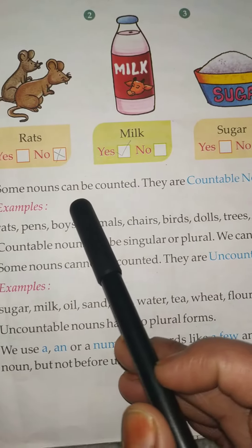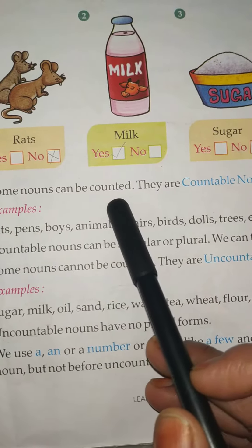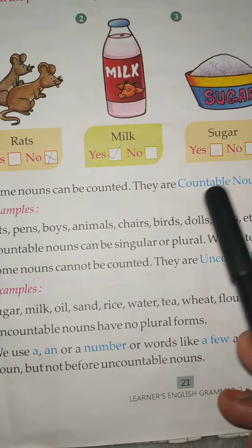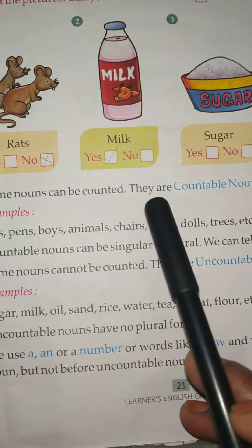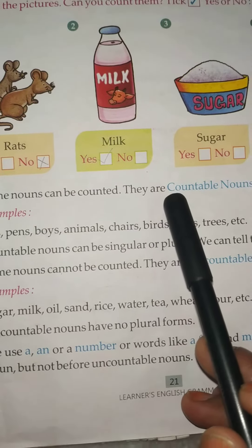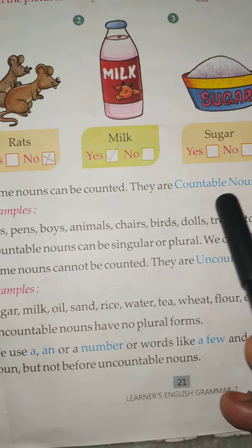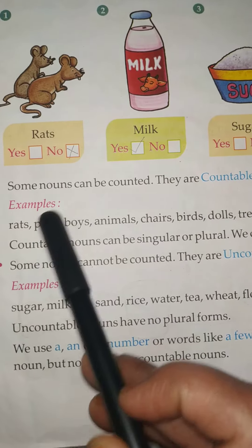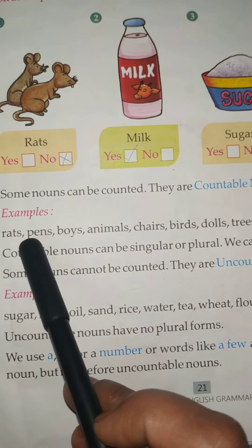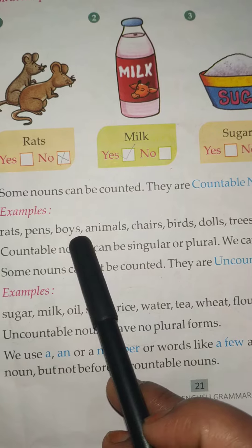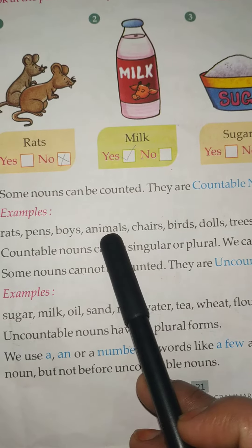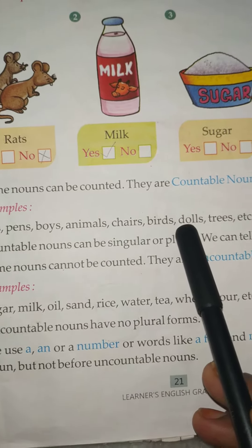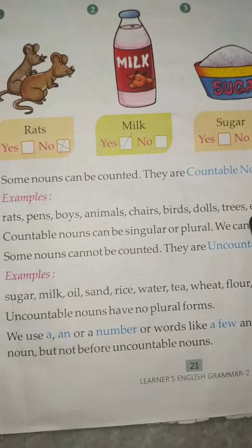Some nouns can be counted. They are countable nouns. Which nouns can we count? We call them countable nouns. Examples: rats, pants, boys, animals, chairs, birds, dolls, trees, etc.